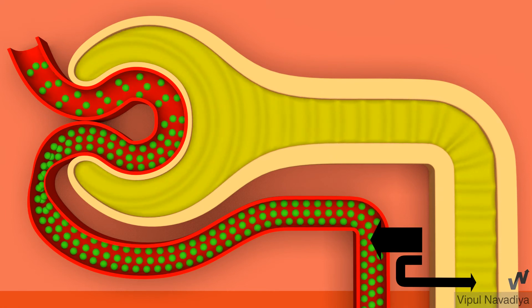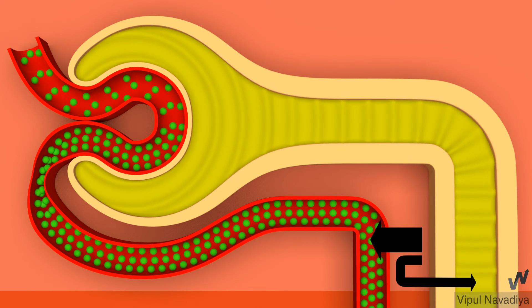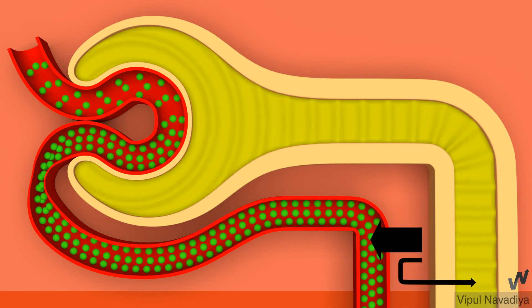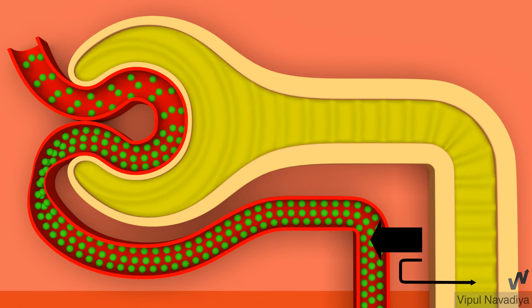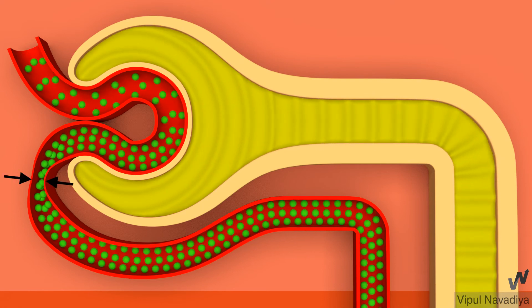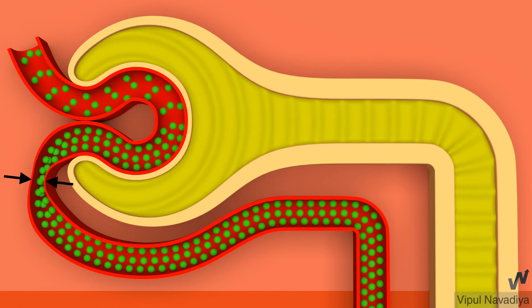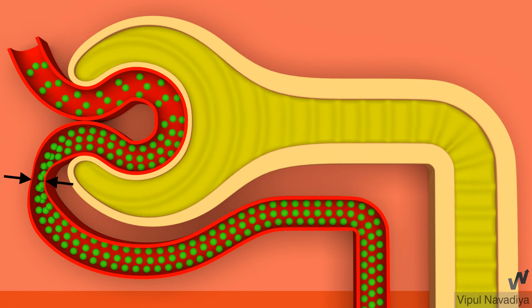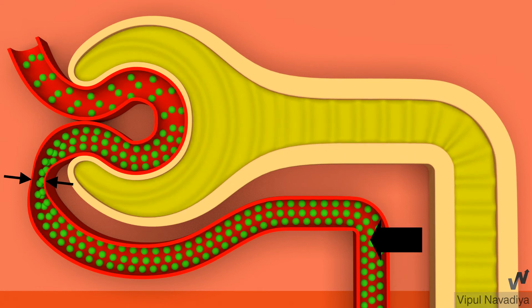So now with higher net driving force, even more fluid from interstitium is drained and less leaks back into the lumen. So net tubular reabsorption increases. In a nutshell, increased efferent arteriolar resistance, or in other words, constriction of efferent arteriole increases net tubular reabsorption.